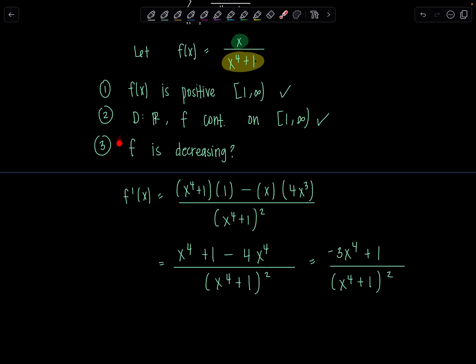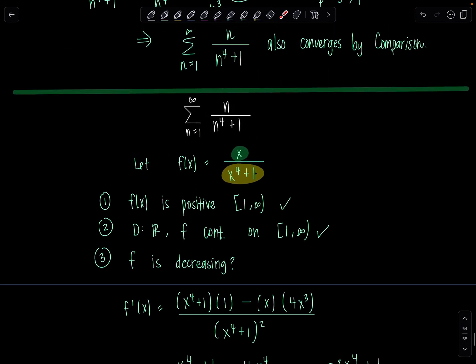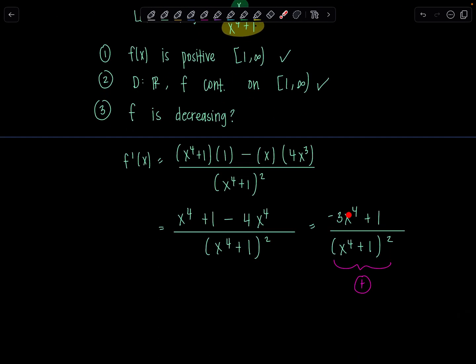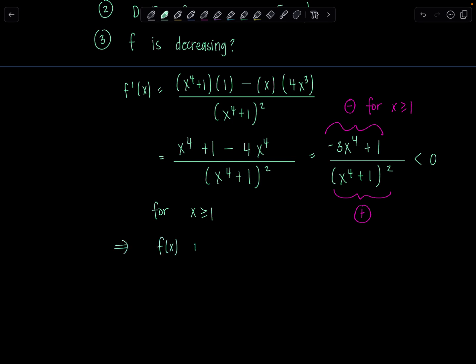To show that f is decreasing, I want to determine whether the derivative is negative. The denominator is some quantity squared — always positive. I'm only interested in x values from 1 to infinity. For x greater than or equal to 1, the numerator negative 3x to the fourth plus 1 is always negative — if x is 1, that's negative 2; if x is 2, even more negative. So the derivative is negative for x greater than or equal to 1, which means f of x is decreasing on 1 to infinity.